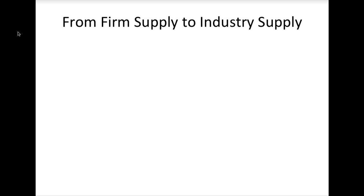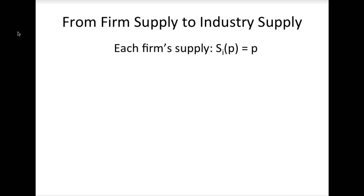To find the short-run industry supply, simply add up the supply curves of the individual firms in the market. Let's take the simplest example possible. Suppose that each firm in the industry has the simplest supply curve, S of P equals P.